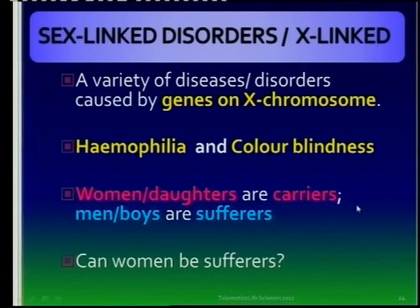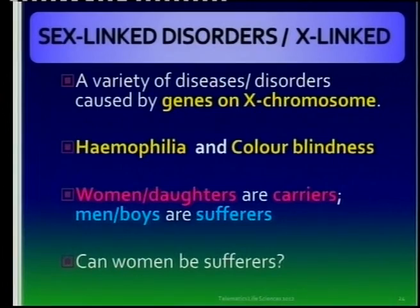You will find that there are many other genetic diseases. For instance, albinism is one that you have to know. But the only two sex-linked disorders are hemophilia and colorblindness. So don't get confused, please.